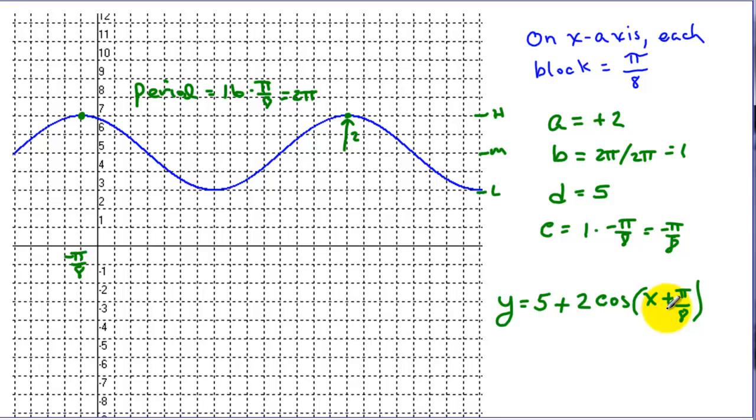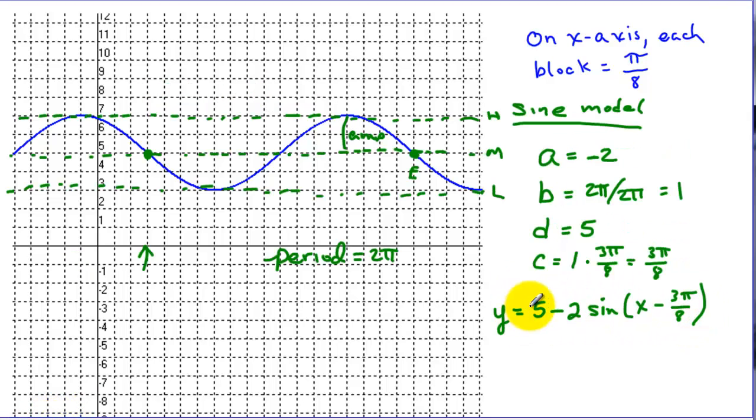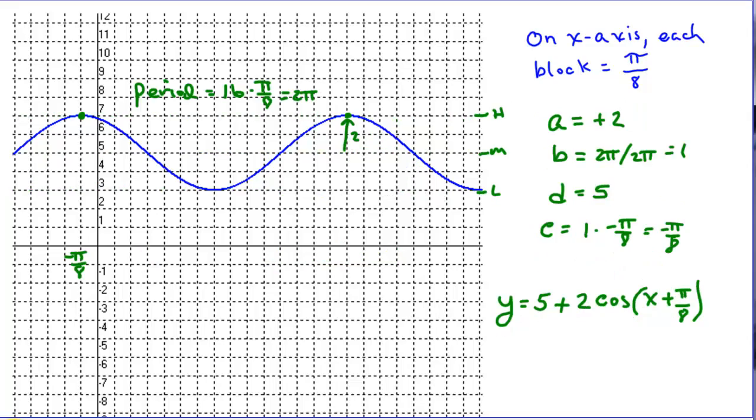Now we came up with two different functions. This is a cosine function and this is a sine function, but they're equivalent because they produce the same graph. So good luck on working your own problems. See you later.